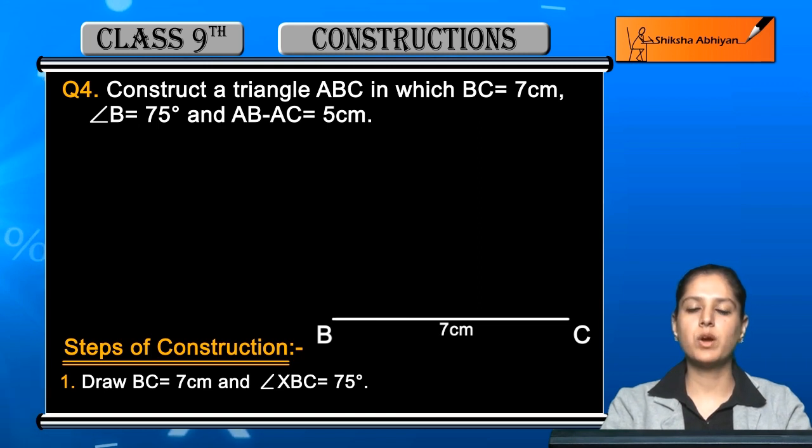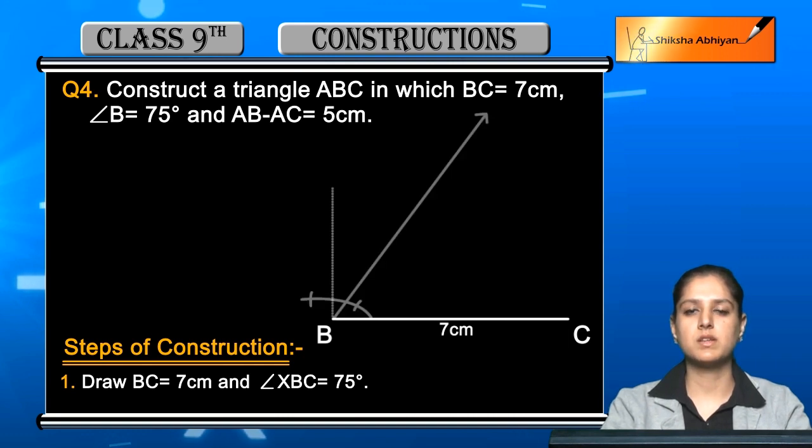Now on this line at point B, construct an angle XBC with measurement 75 degree as per the question. So two things are done: base and base angle.